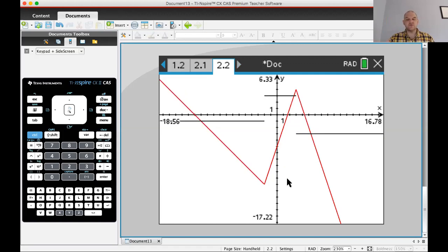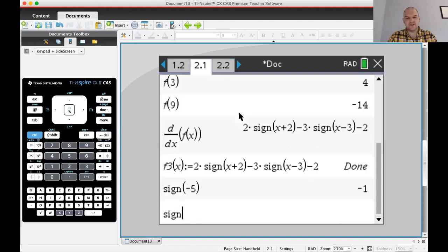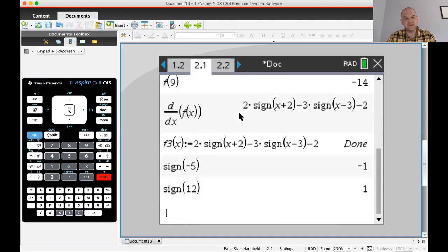It instantaneously changes from 3 to negative 3, which is why the derivative doesn't exist there. So that's pretty cool. The SIGN function, if you've never run into it before, literally returns negative 1 for negative values and positive 1 for positive values. It's kind of a weird function.